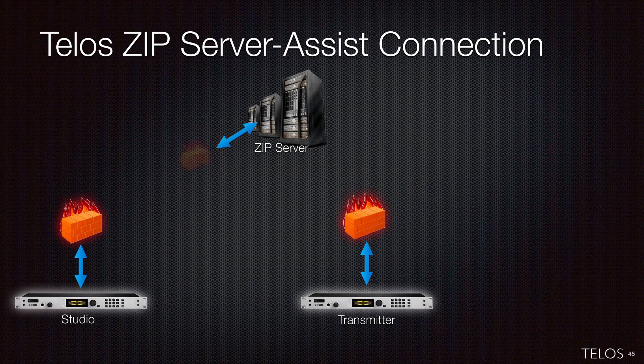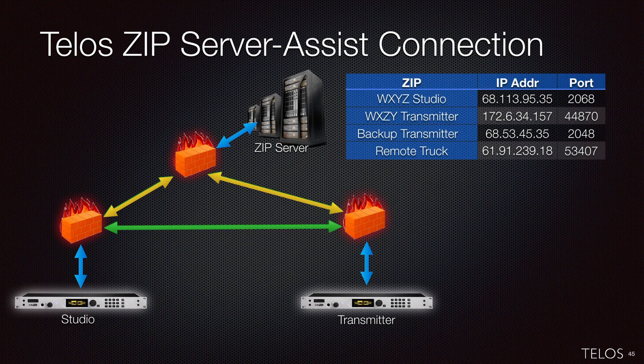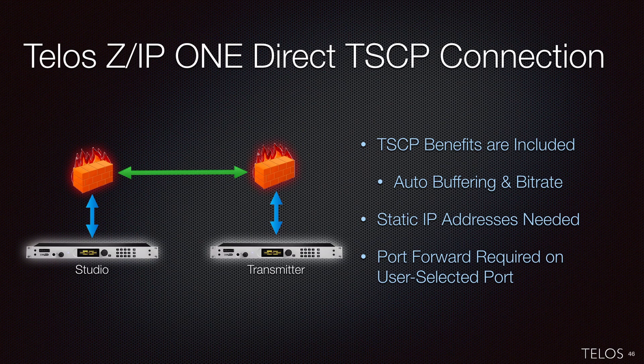Those are the three major ways of connecting. Through the zip server — easy to set up, works with about 95% of all routers without further configuration — the only downside is depending on the zip server for presence information. If routers are particularly restrictive, the zip server may relay the media itself rather than peer-to-peer, adding uncertainty. A direct TSCP call requires static IP addresses and an open port, but gives you an absolutely direct connection with all the benefits of agile connection technology.